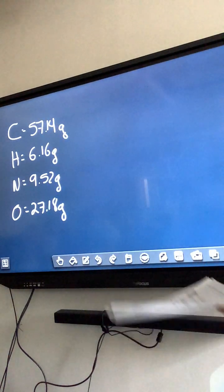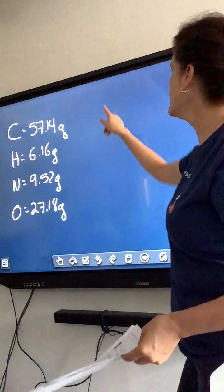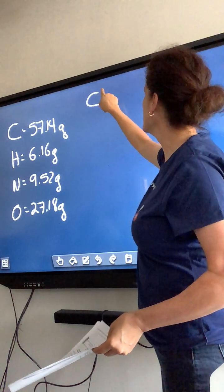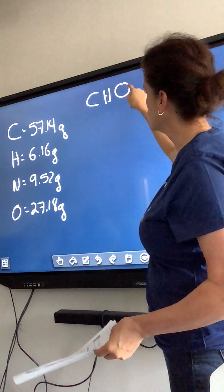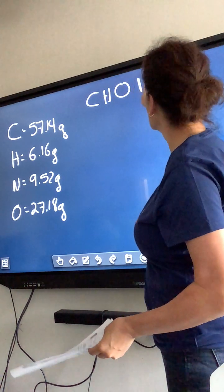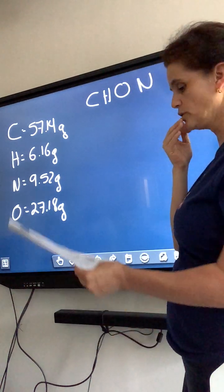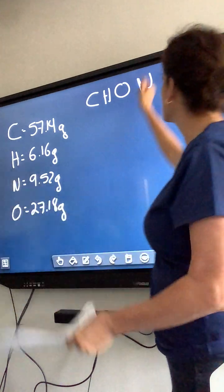And 6.16 grams hydrogen, 9.52 nitrogen, 27.18 oxygen. So, we have a compound, NutraSweet, that it is made out of C-H-N-O.